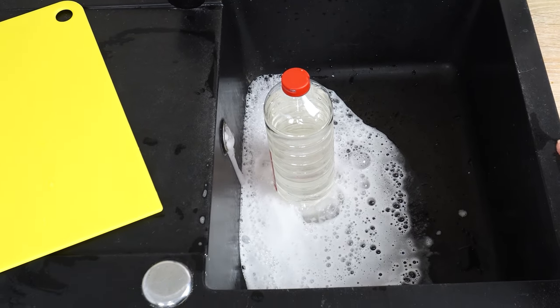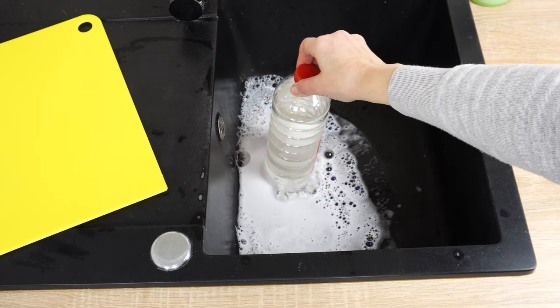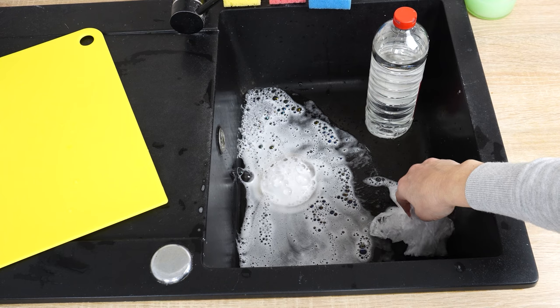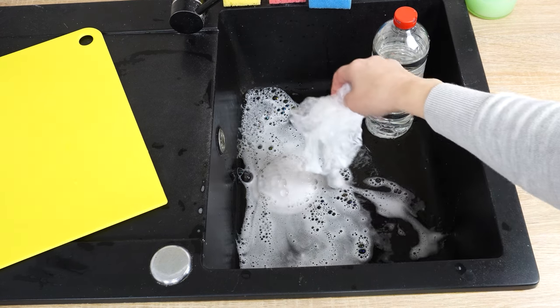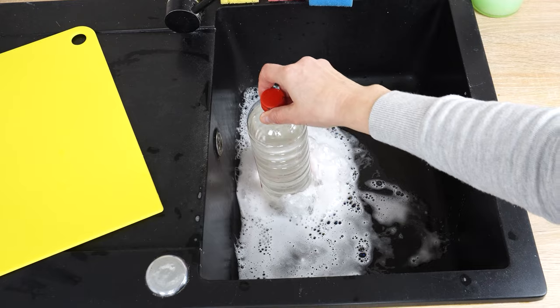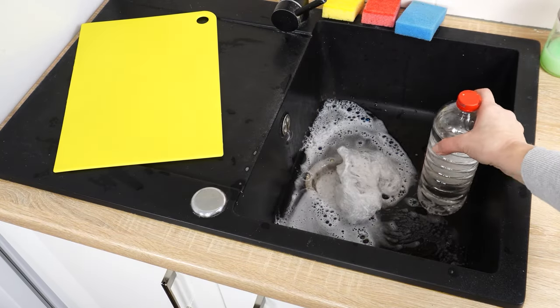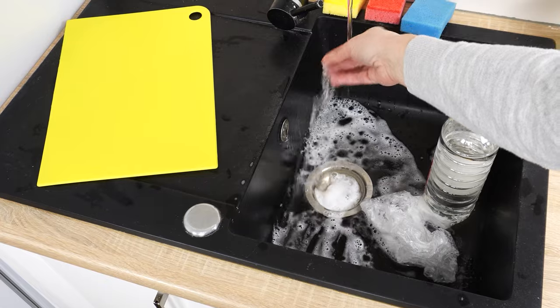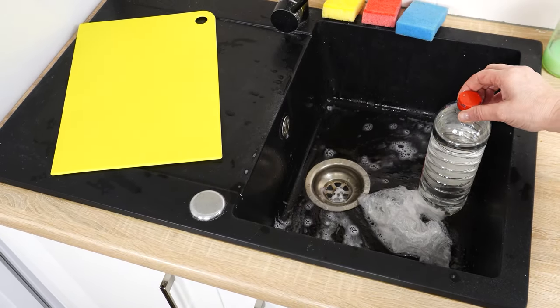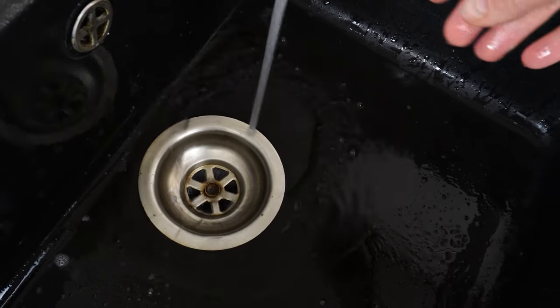When foam stops coming out, unplug the sink and see what happens. If foam starts coming out of the sink again, plug it again for a longer time. Usually, it takes about half an hour for the mixture to clean the sink. Only when everything starts to flow into the sink can you turn on hot water and flush the sink thoroughly. Hot water will remove all the residue that the soda, liquid, and vinegar broke down. If you take care of the sink like this once a month or every two months, you'll never have to call a plumber.